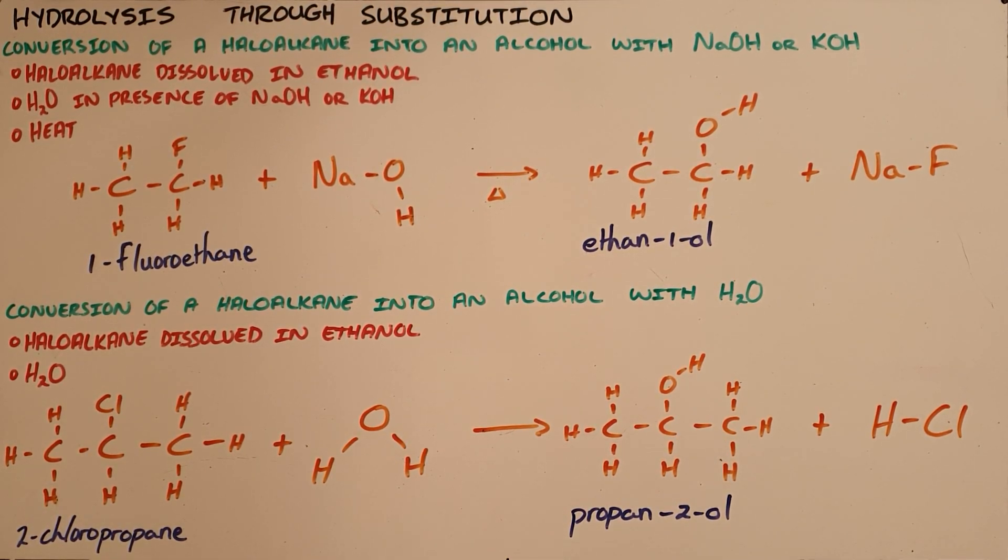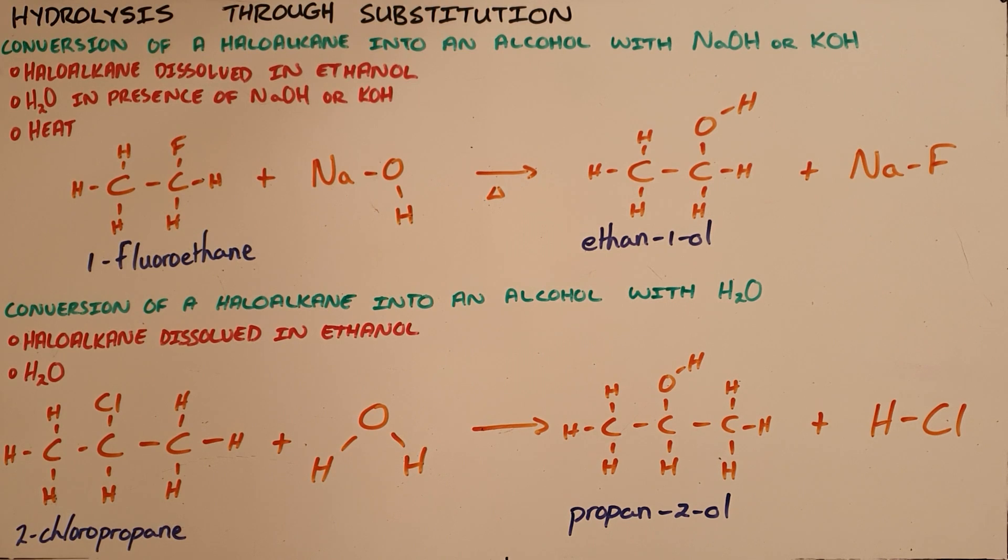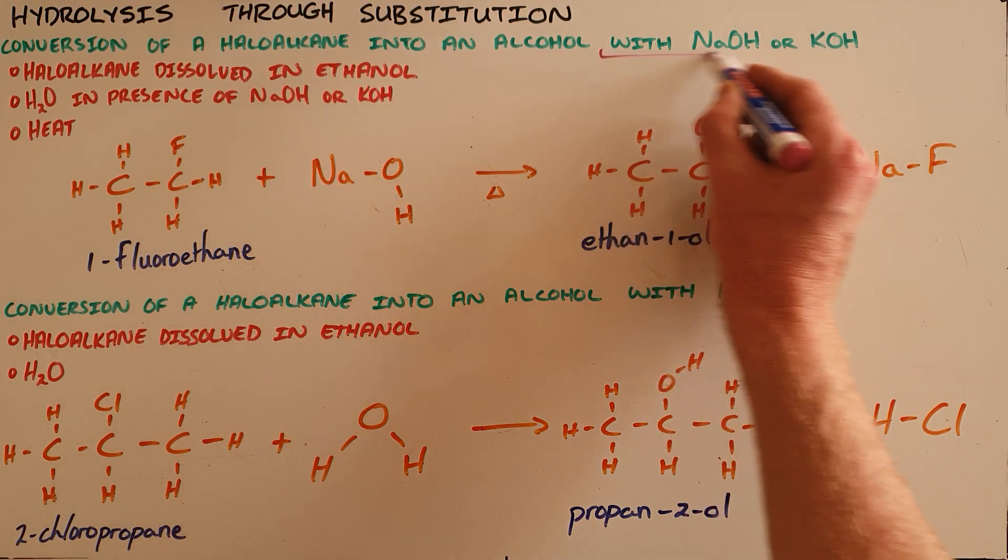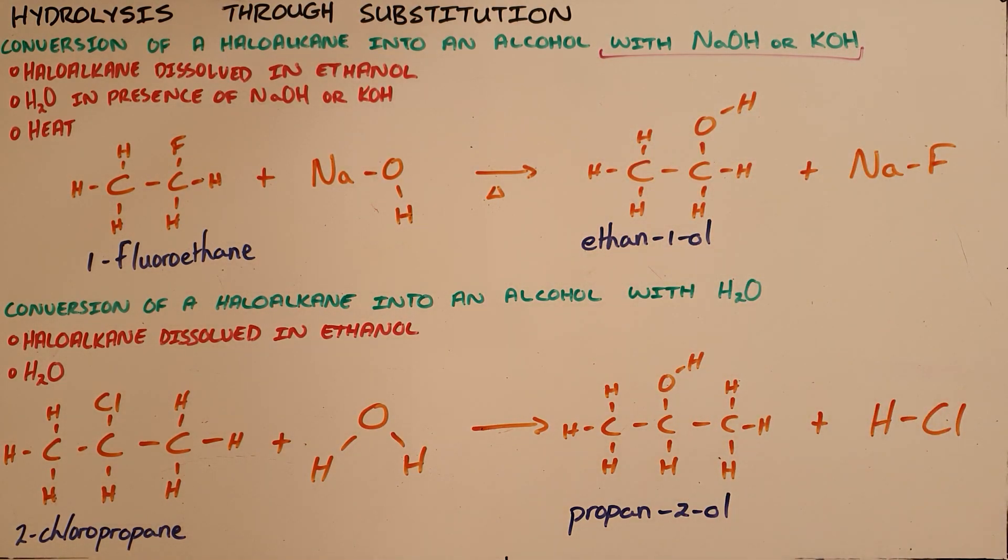Hydrolysis through substitution is the conversion of a haloalkane into an alcohol, and there are two ways in which that can be done. The first is with sodium hydroxide or potassium hydroxide.